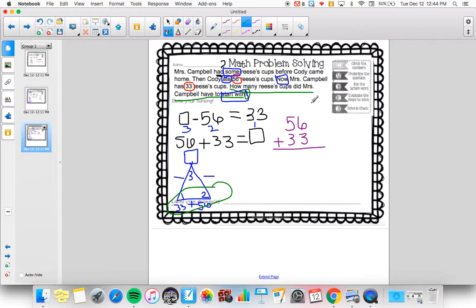33 plus 56, which I've already done over here to the side. And they'll come over here and they'll say 6 plus 3 is 9. And 5 plus 3 is 8.